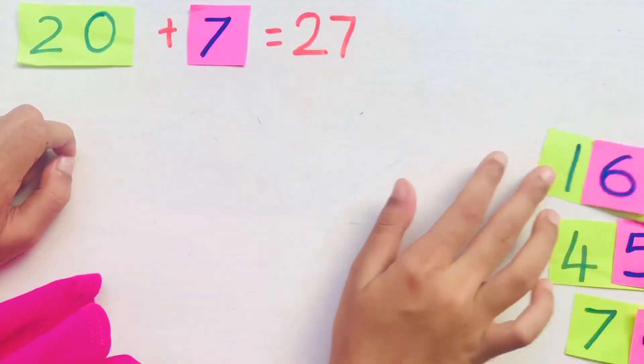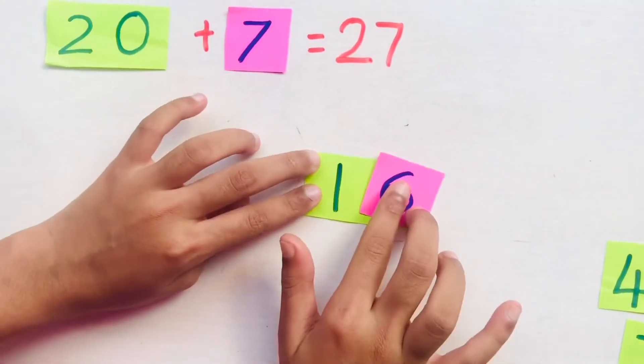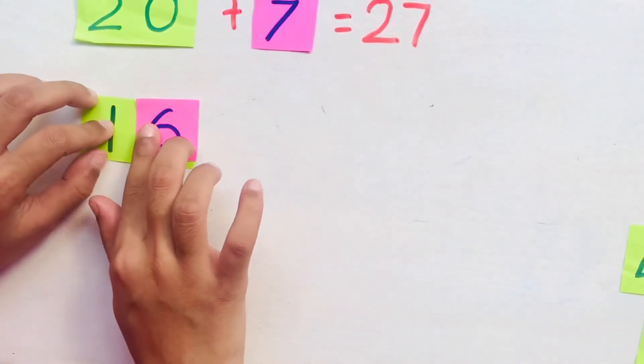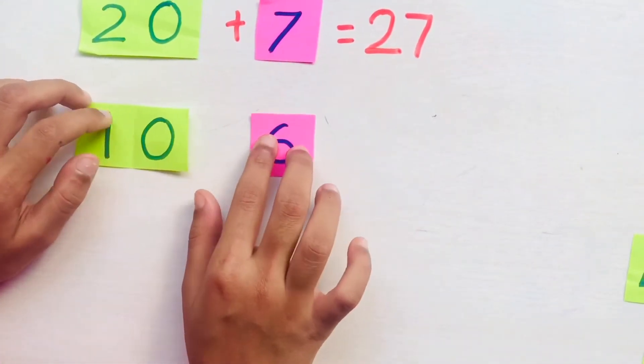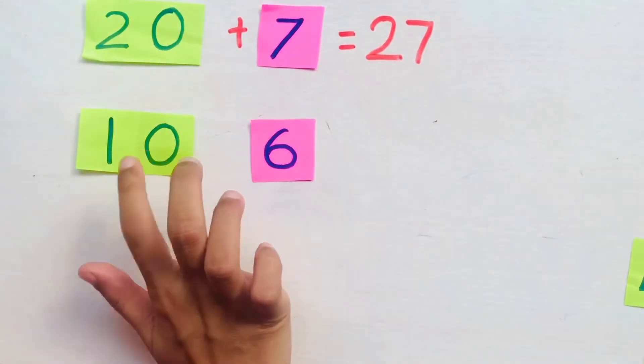Next we have 16. We do the same. When we separate we write 10 plus 6 makes 16.